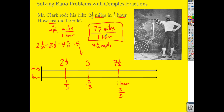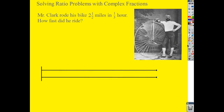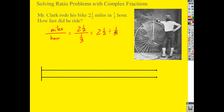You could also use a complex fraction: miles per hour means I take two and a half divided by one-third. Dividing by one-third means multiplying by its reciprocal, so I get two and a half times three over one. But we need to convert two and a half to an improper fraction first: two times two is four, plus one, so that's five-halves. Five-halves times three over one is fifteen-halves, which is seven and a half. Same answer.